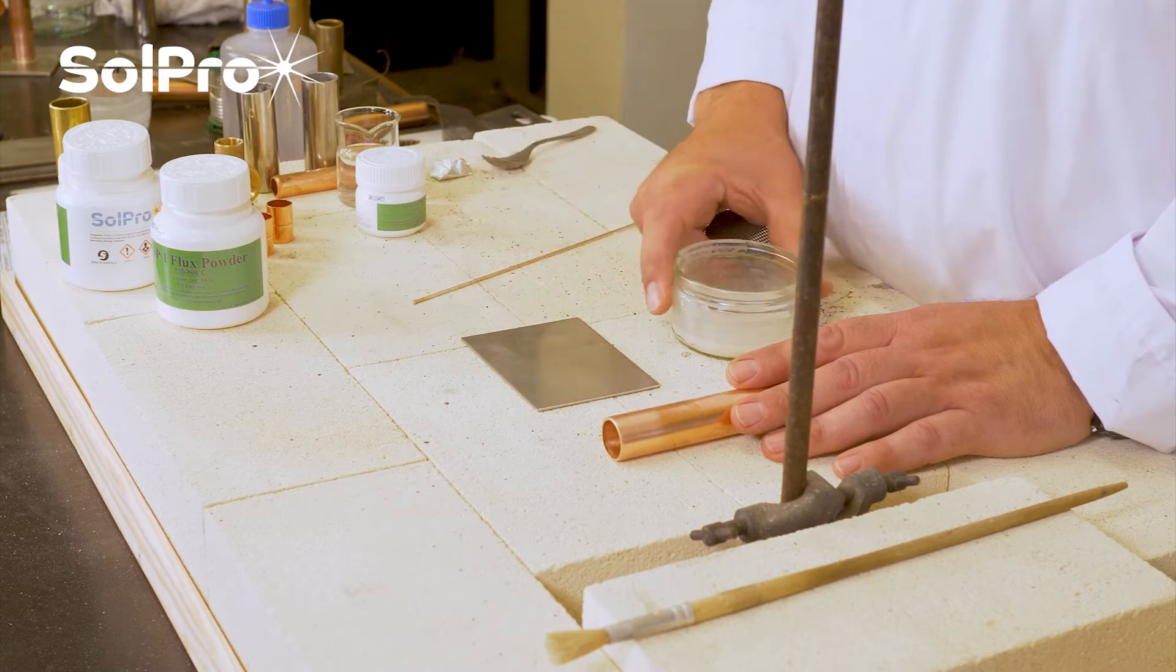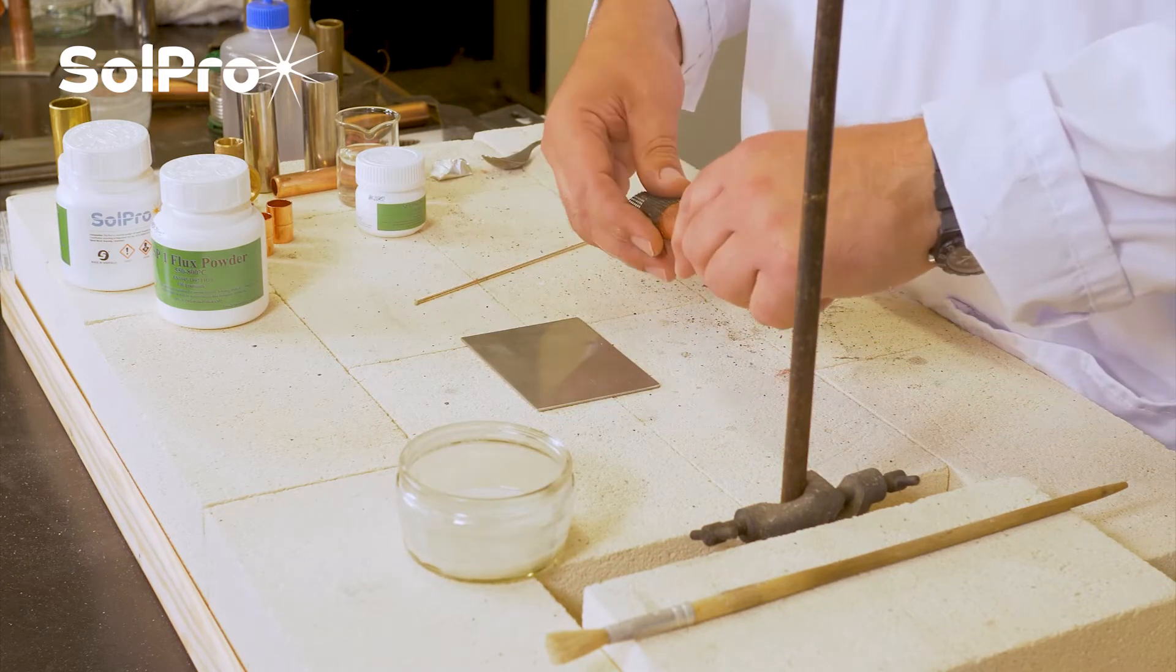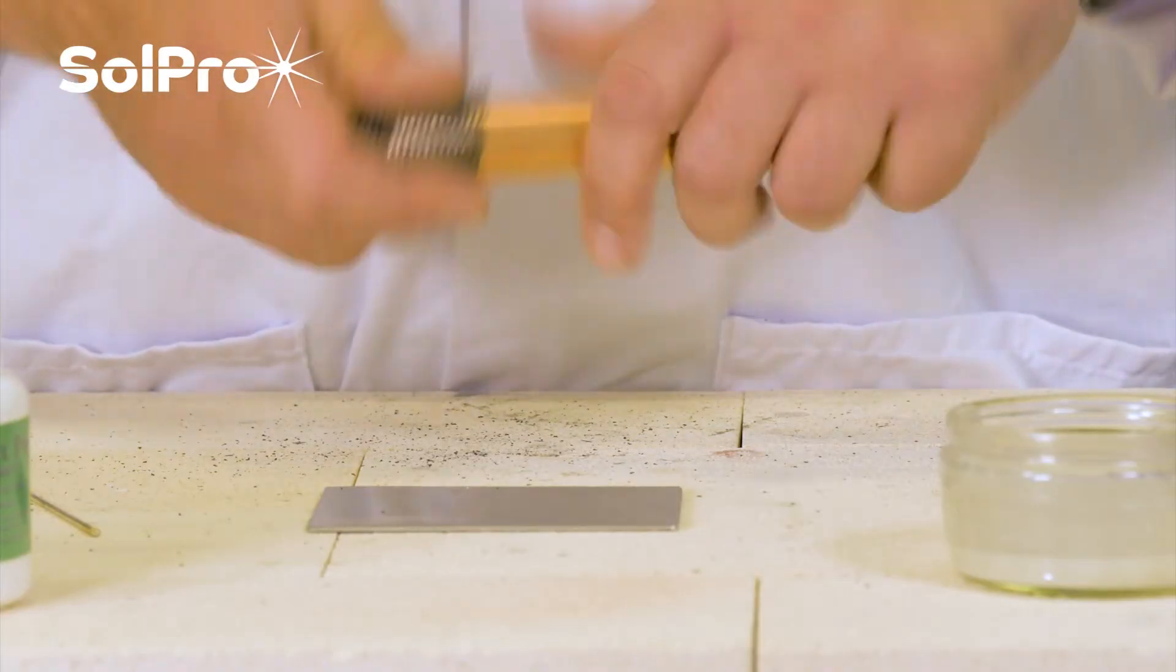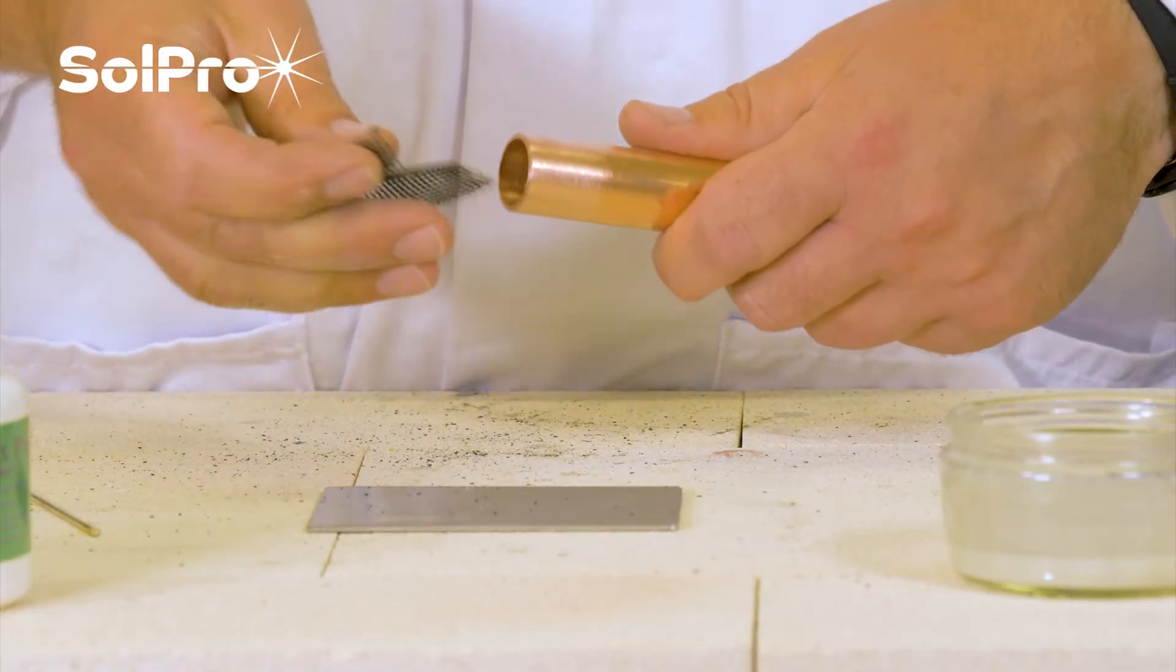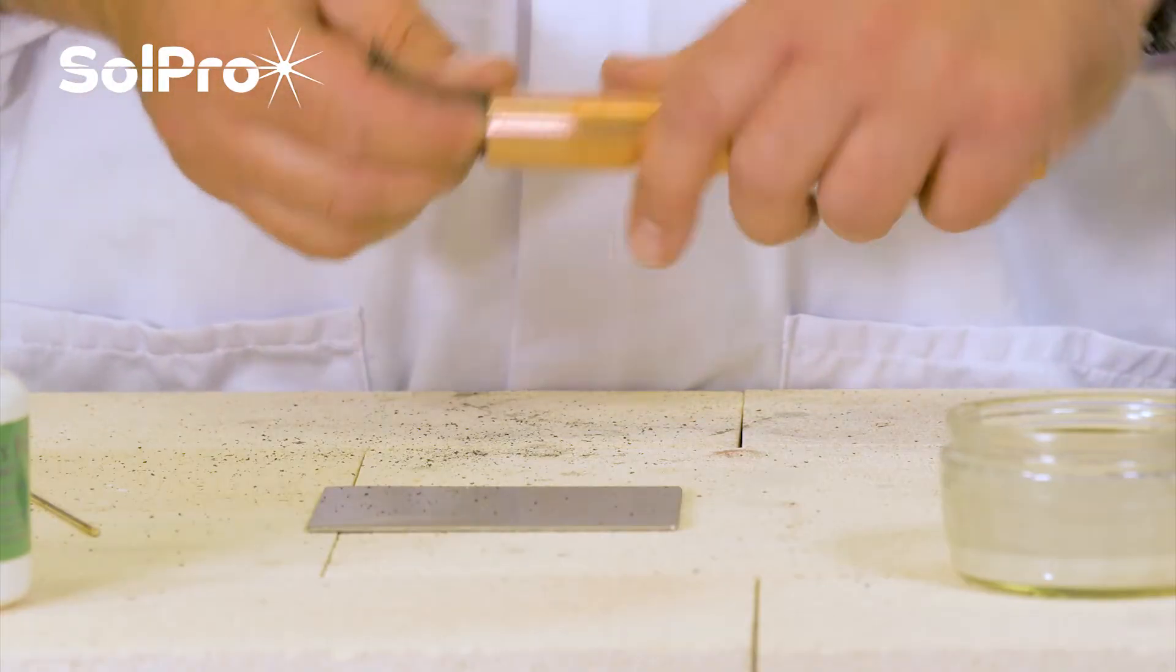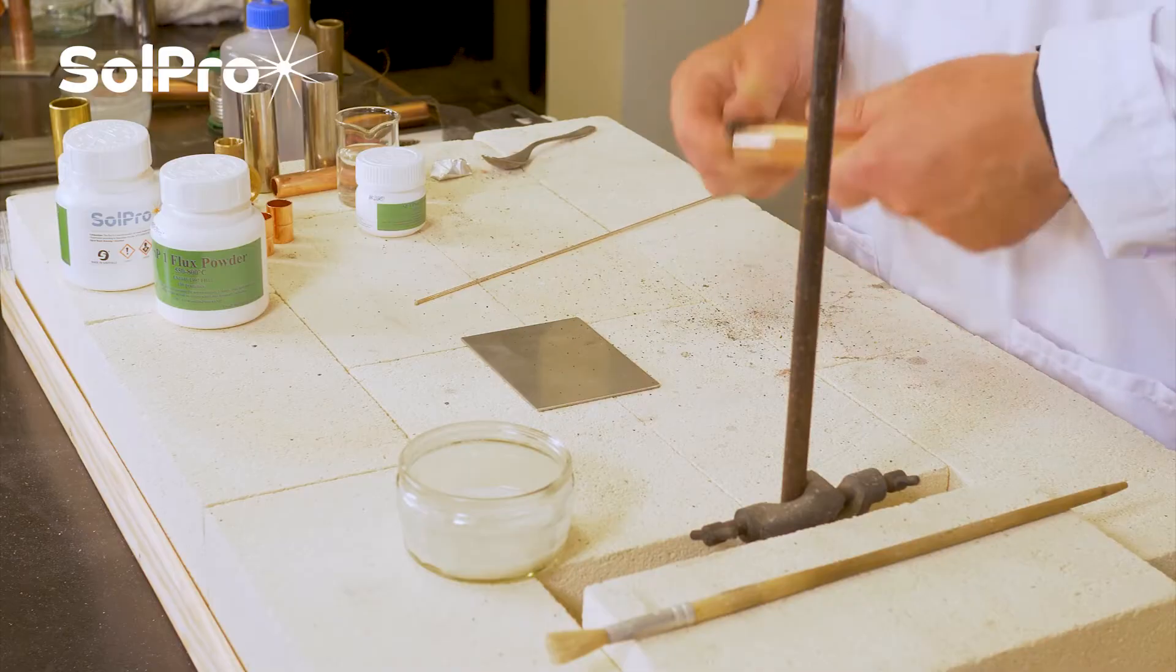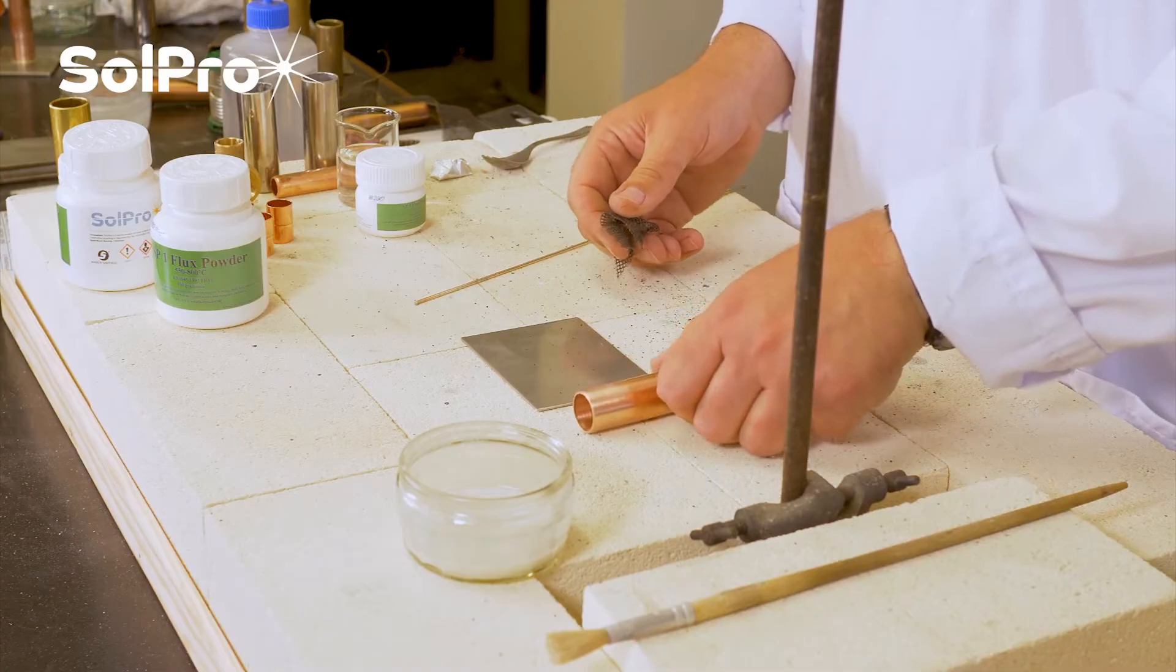Like all good brazing, it starts with cleaning everything. I've pre-cleaned this, but with a piece of emery webbing that we use, you clean off both inside and out. Although the braze is going to be predominantly on the outside and on the end, it's good practice just to clean it on the inside and the outside.